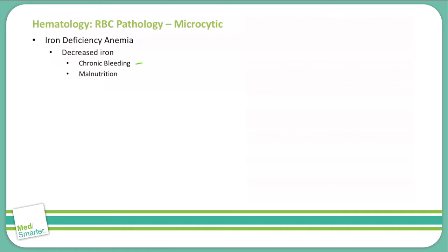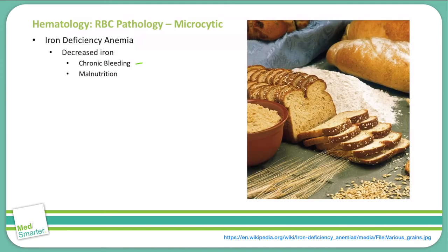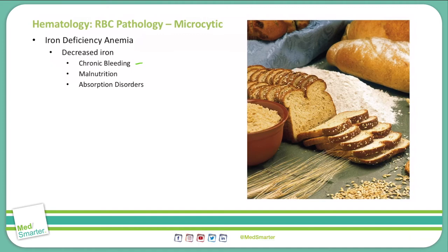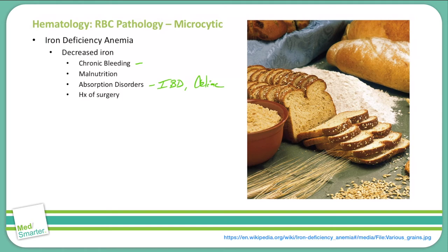Iron deficiency can also be due to malnutrition. Malnutrition is mitigated in the western world, often by fortifying flour with iron, so our breads and other cooking products have iron in our diet that will help decrease the risk of iron deficiency anemia. There are also absorption disorders that can cause iron deficiency anemia, namely irritable bowel disease as well as celiac. A history of surgery, specifically bowel resection, can also cause decreased iron and iron deficiency anemia.